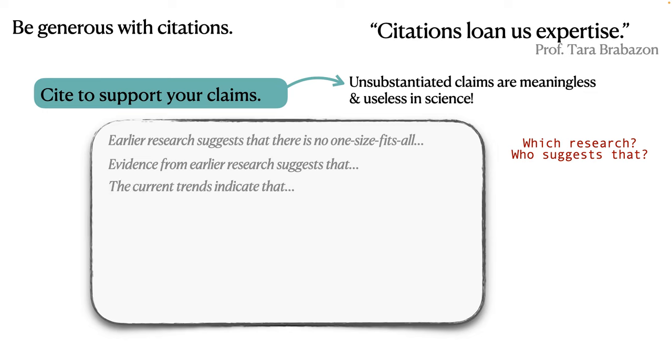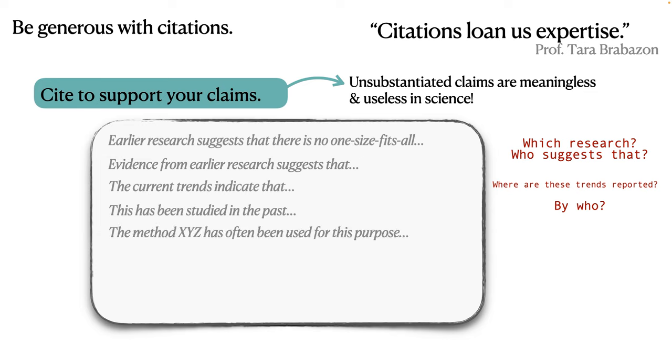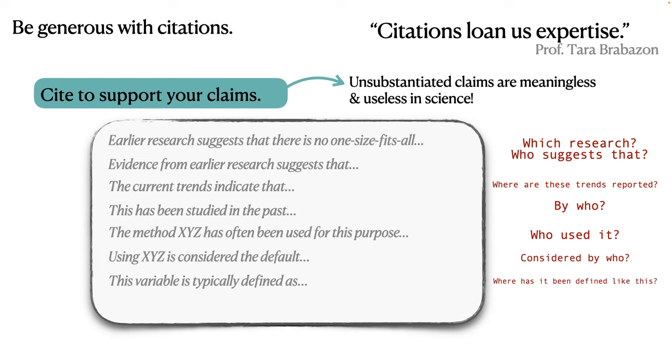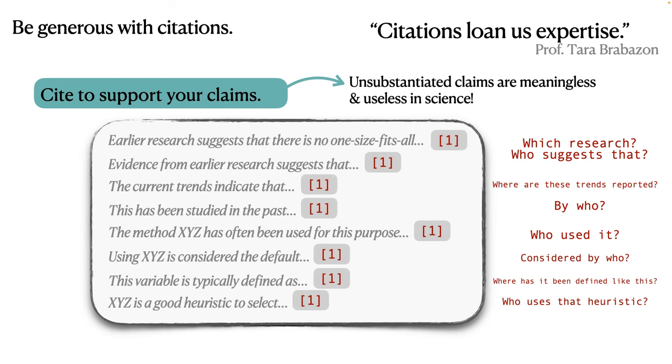Or if you say something like the current trends indicate that, well, where are these trends reported? Or this has been studied in the past by who? Or the method XYZ has often been used for this purpose. Well, who used it? And is it really being used often? So who often uses it? Or using XYZ is considered the default? Well, considered by who? Or this variable is typically defined as this and that. Where has it been defined like this? Or XYZ is a good heuristic to select something. Well, who uses that heuristic? So any sentence that looks like this should really have a citation.